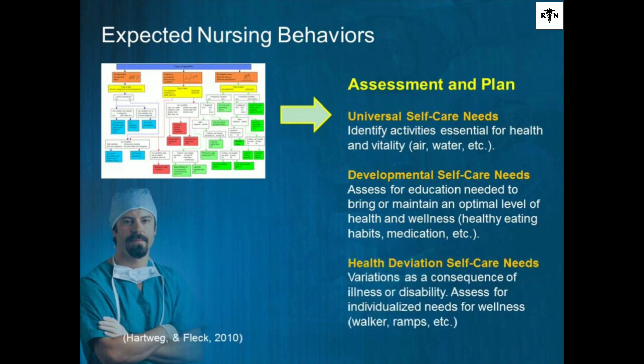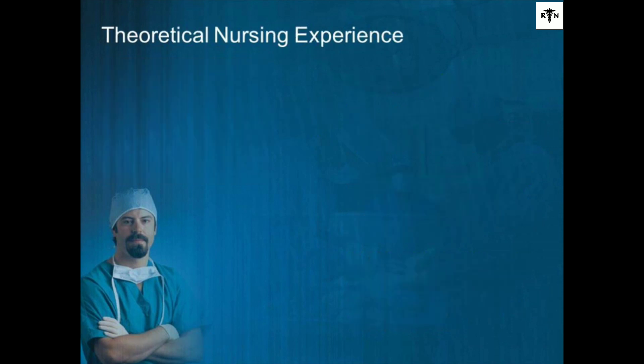Health deviation self-care needs: this assessment looks at changes due to illness or disability. It is important to cover individualized needs for wellness, such as walkers and other durable medical equipment to assist in activities of daily living.